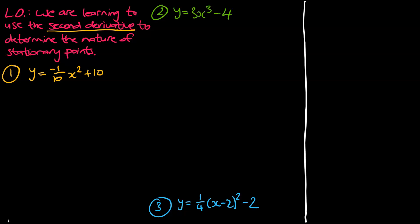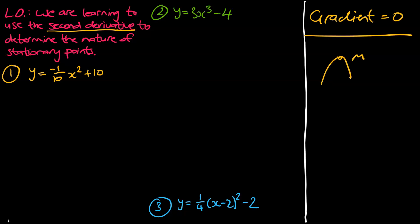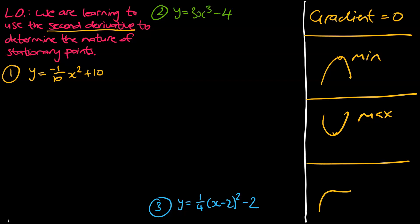Before we go on to that, let's quickly recap what we learned. We know the gradient at a stationary point is equal to zero. We learned about minimums, we learned about maximums, and we learned about points of inflection. And what I want to do is show us how the second derivative can help us with that.